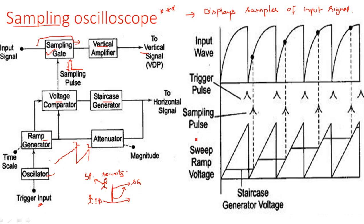If you observe the waveforms and block diagram operation in parallel, you can easily understand the entire operation. The waveform you are going to display on the CRT screen has samples taken at various points across cycles. The ramp voltage (sweep voltage) is a continuously incrementing signal that resets whenever a triggering pulse occurs.